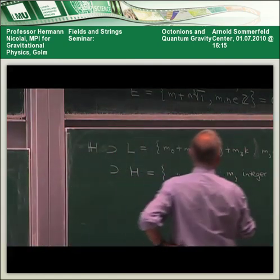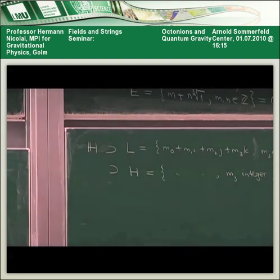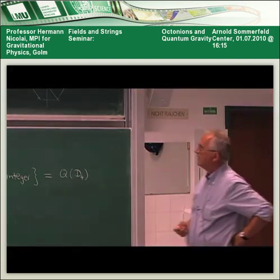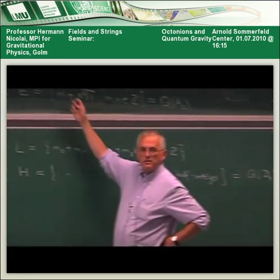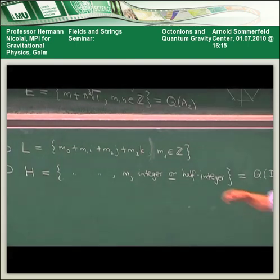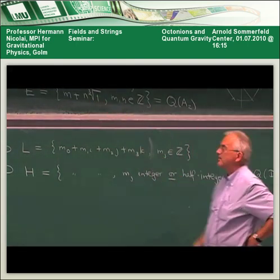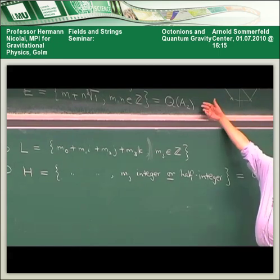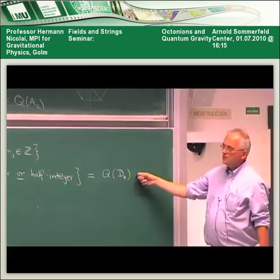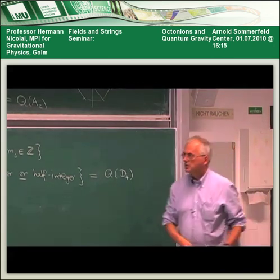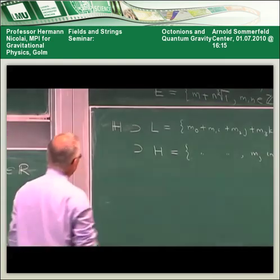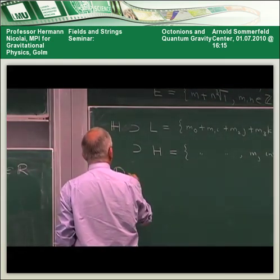This surprising result is that the root lattice of SO(8), D₄, can be endowed with the structure of a ring, in the sense that the root lattice is really a ring of integers. In this ring, the units — elements that have an inverse — are precisely the roots of the algebra. So we've seen: A₁ gives reals, A₂ gives Eisenstein integers, D₄ gives Hurwitz integers. The Hurwitz integers form a non-commutative but still associative ring of integers.